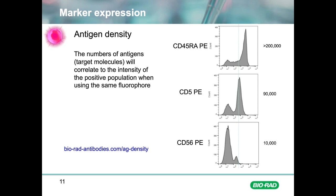For instance, cells stained with CD45RA, carrying more than 200,000 surface receptors, are strongly positive. CD5 with around 90,000 is less positive, whilst CD56 with around 10,000 surface antigens gives a much dimmer positive population. This will affect your panel. As a general rule, it is good practice to put bright fluorophores on low-density markers and dimmer fluorophores on high-density markers.